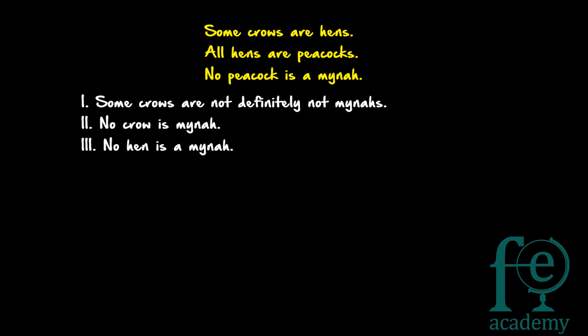So our question is: some crows are hens. All hens are peacocks. No peacock is a mina. These are the three given statements and the three given conclusions are: some crows are definitely not minas, no crow is mina, and no hen is a mina.